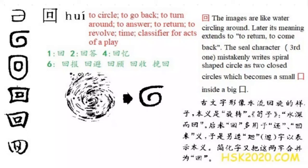Chinese character evolution. 汉字演变. 回 — 回家的回. The oracle bone script and the bronze character 甲骨文和金文 all have similar shape but with different directions.